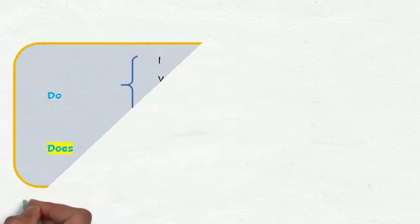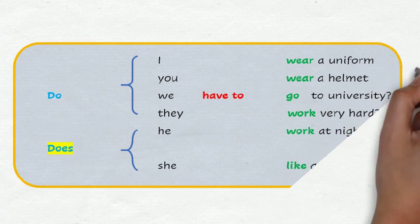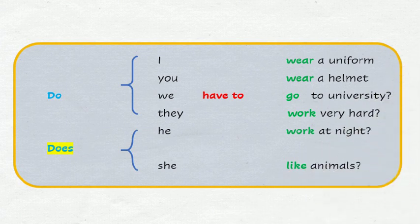So let's remember, for making questions, we use do for I, you, we, and they. And we use does for he and she.